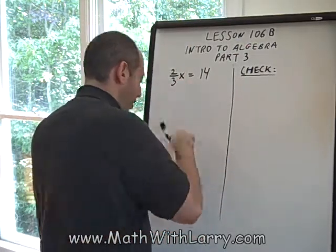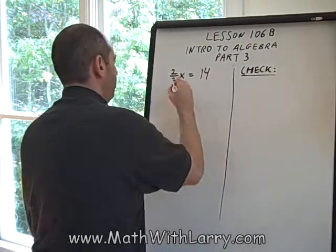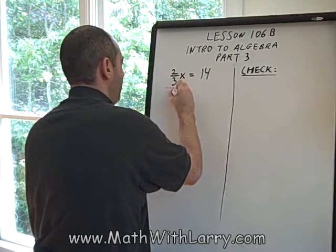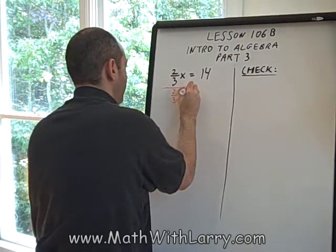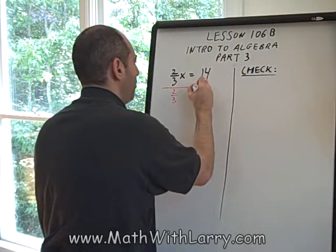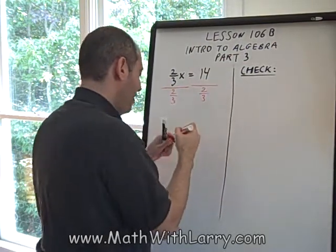Since x is being multiplied by 2/3, let's go ahead and do it in red. Since x is being multiplied by 2/3, I'm going to do the opposite, which is to divide by 2/3. Now, since I did it on the left, I'm going to do the same thing on the right.